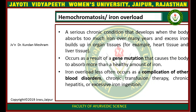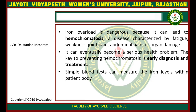Hemochromatosis, that is iron overload, is a serious chronic condition that develops when the body absorbs too much iron over many years, and excess iron deposits in organ tissues such as the heart and liver. It occurs as a result of gene mutation causing the body to absorb more than the healthy amount of iron. Iron overload may also appear as a complication of other blood disorders, chronic transfusion therapy, chronic hepatitis, or excessive iron utilization. Iron overload can lead to hemochromatosis, characterized by physical weakness, joint pain, abdominal pain, or organ damage, and can eventually become a serious health problem.